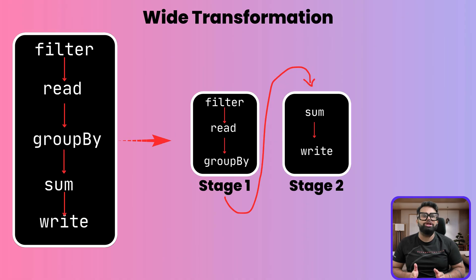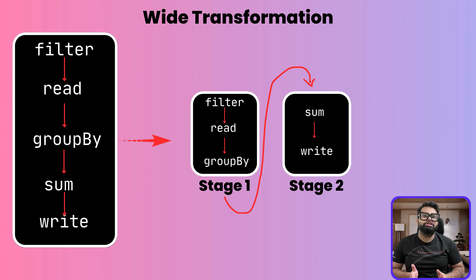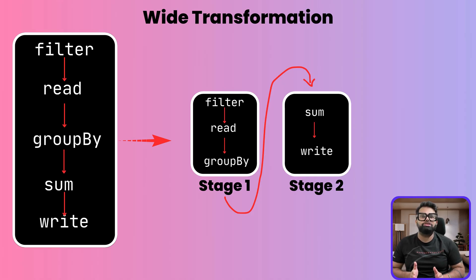Here is how Spark splits your job because of this. Stage 1: read the Parquet data from S3 and apply the filter where year equals 2024 — these are the narrow transformations. Stage 2: perform the group by and sum, which requires a shuffle, and then write the results back to S3. Every time Spark needs to shuffle data, it creates a new stage boundary. So as a rule of thumb, one shuffle splits the job into two stages.